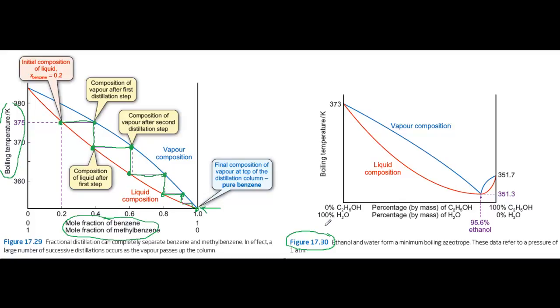If you start with a mixture containing mostly water, say here, you could distill it and the vapour coming off would be richer in ethanol. And you could condense that and boil it again, and you could go through the same series of boiling and condensing as we did in the previous example.